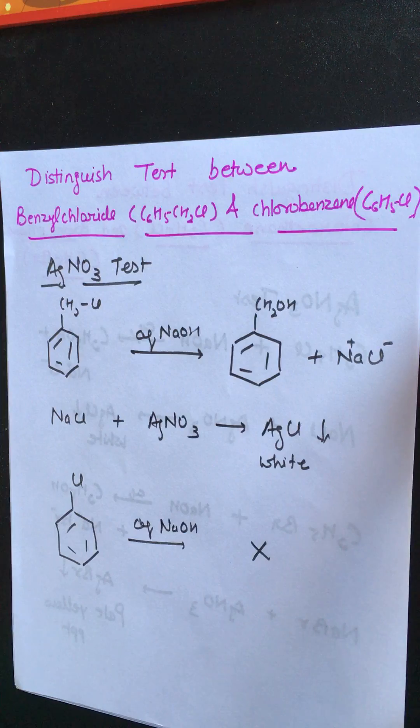So likewise we can distinguish between benzyl chloride and chlorobenzene. Benzyl chloride gives white precipitate with silver nitrate solution while chlorobenzene does not give any kind of reaction.